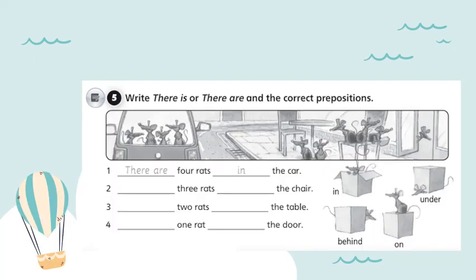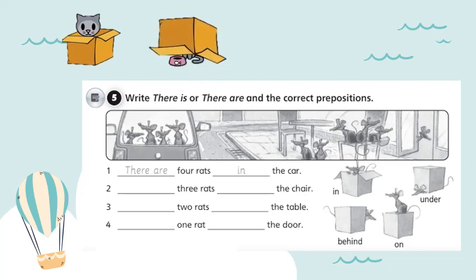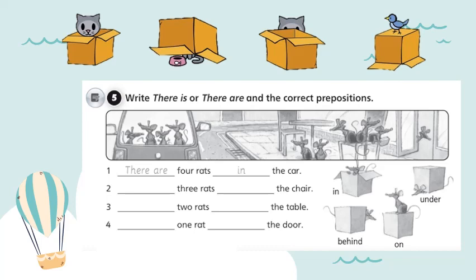Before we complete exercise number 5, let's review some prepositions of place. We have: IN, UNDER, BEHIND, and ON. Let's repeat: IN, UNDER, BEHIND, and ON. To complete the exercise, you're going to use THERE IS or THERE ARE and the prepositions of place.